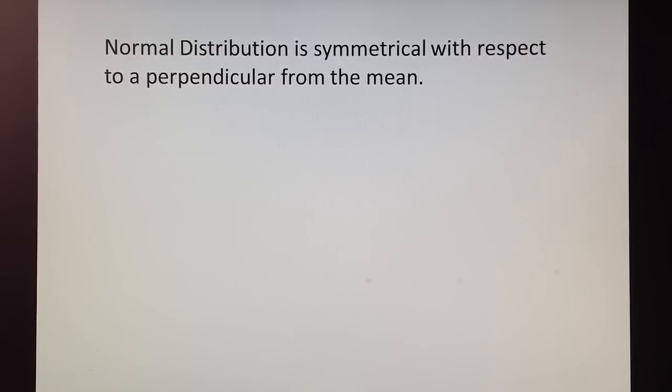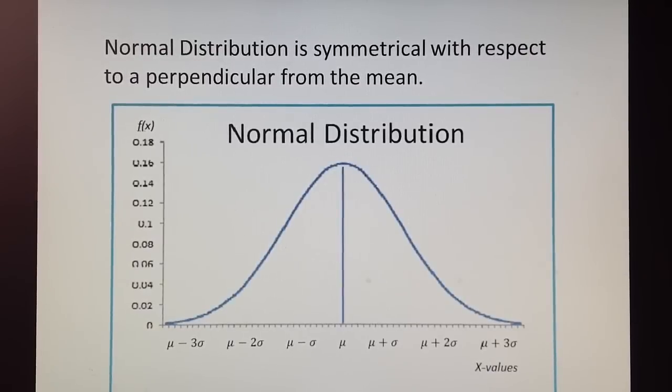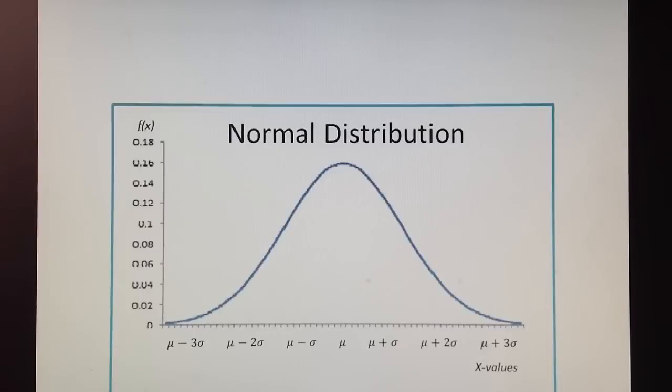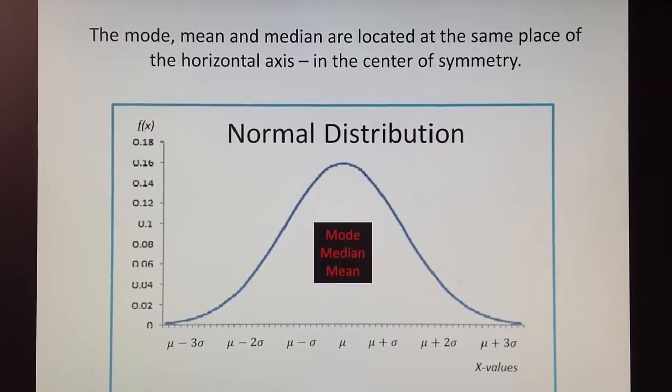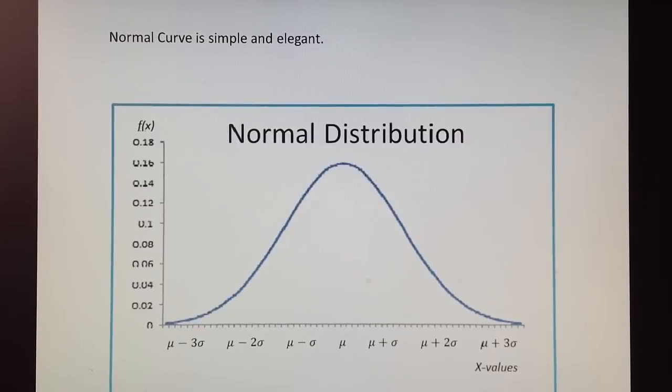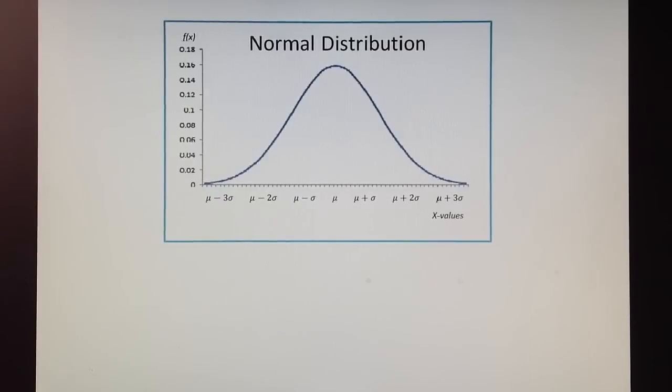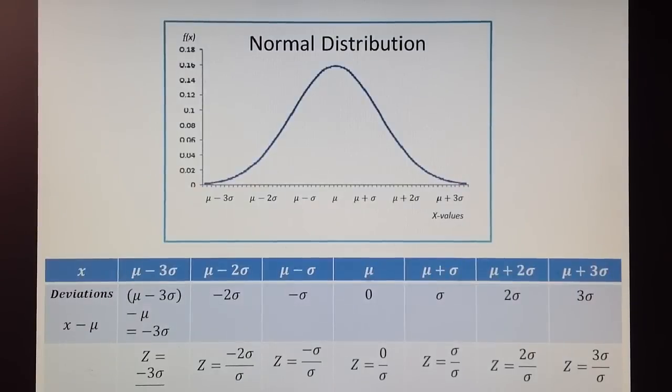Normal distribution is symmetrical with respect to the mean. Normal distribution has its mode, median, and mean in the middle. Normal curve is simple and elegant, and normal distribution can be represented as a standard normal distribution by recalculating x values as z values.